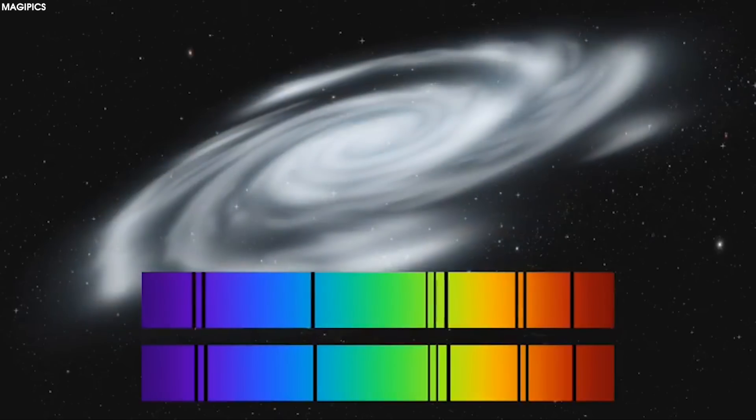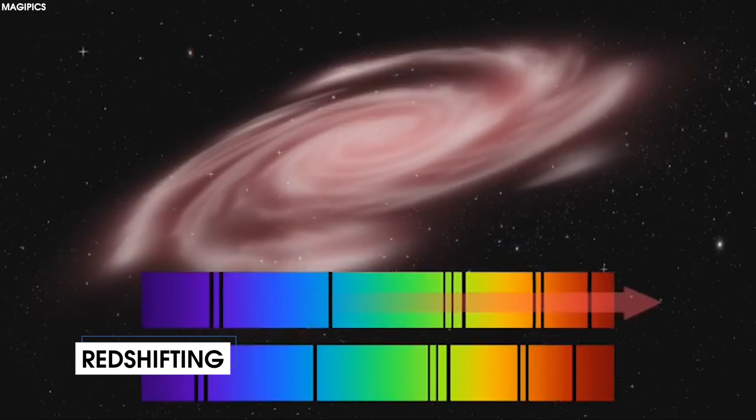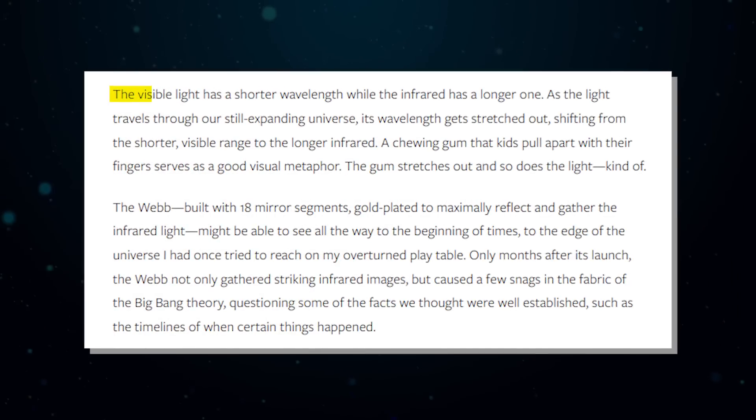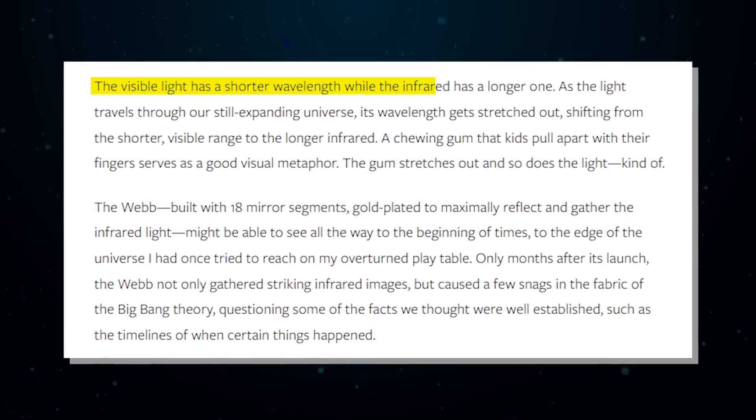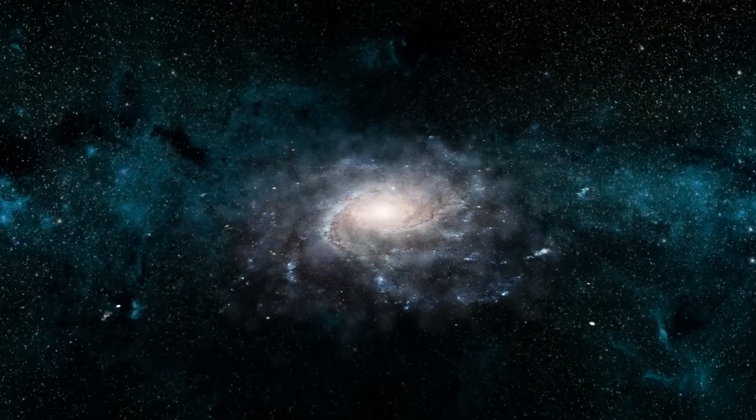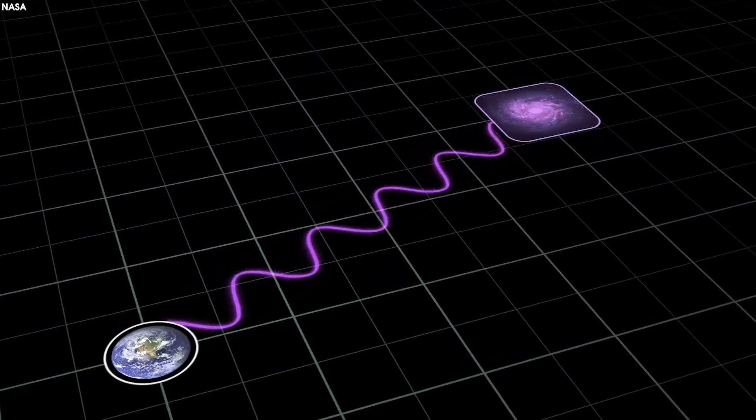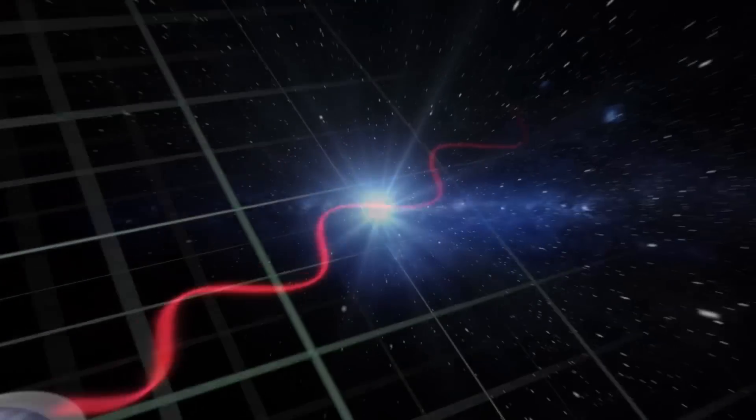In astronomy we call this phenomenon red shifting. The visible light has a shorter wavelength while the infrared has a longer one. As the light travels through our still expanding universe, its wavelength gets stretched out, shifting from the shorter visible range to the longer infrared.